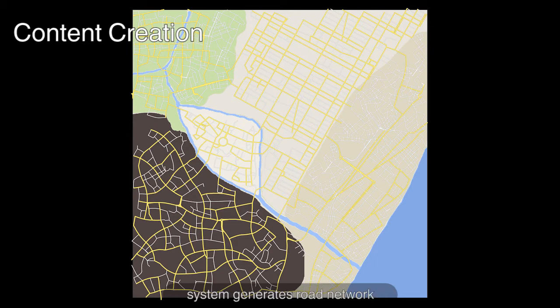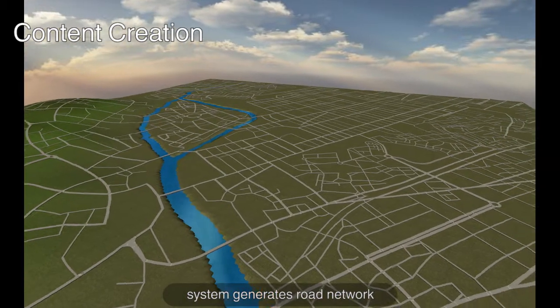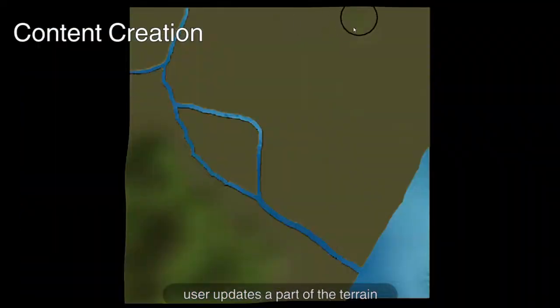Also, the growth process automatically adjusts road positioning due to the underlying terrain gradient. The user then decides to alter a part of the terrain by adding mountains in the top right.